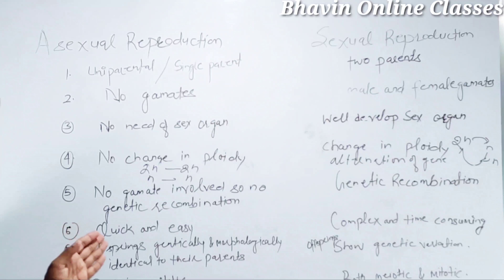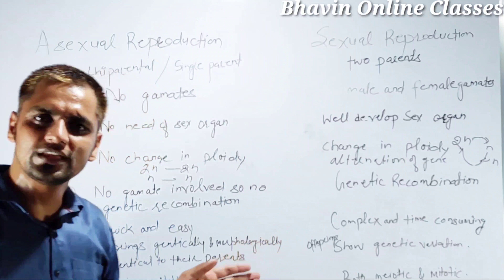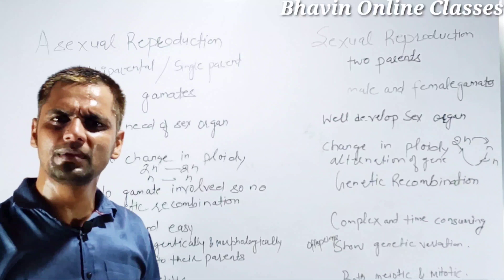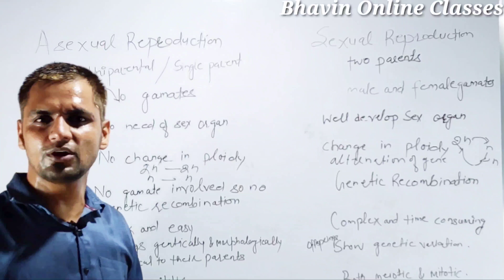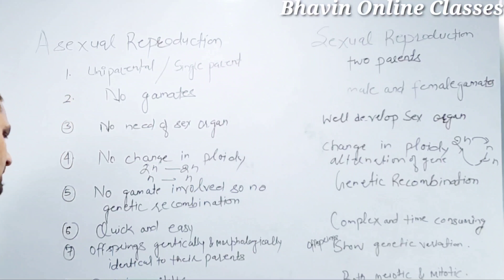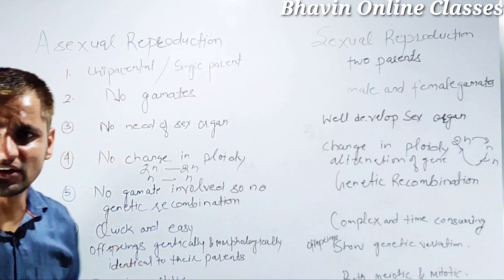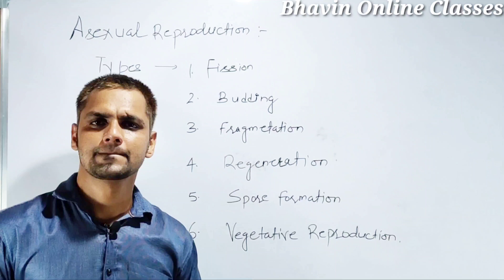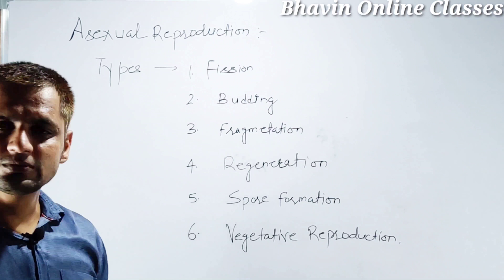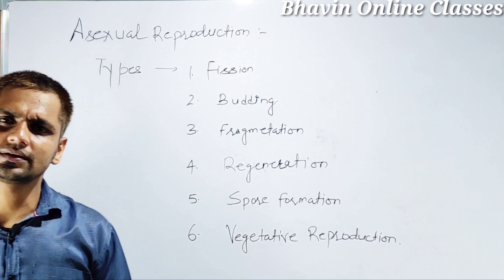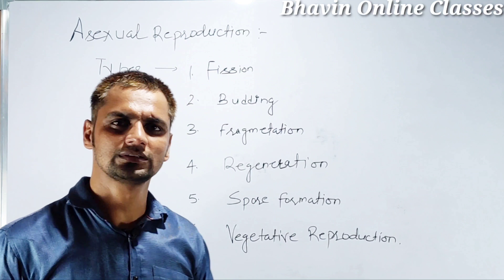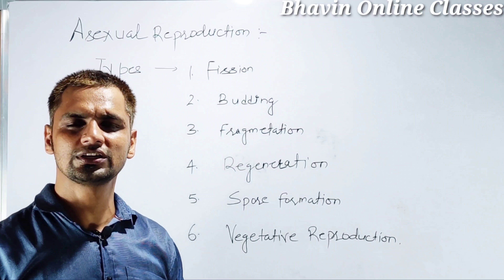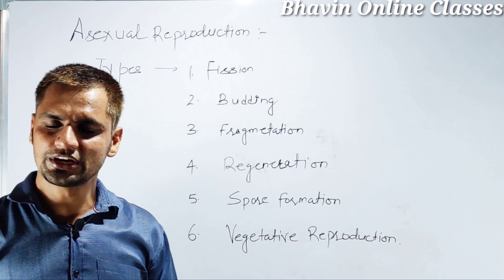Asexual reproduction is quick and easy, while sexual reproduction is complex and tedious. In asexual reproduction, the offspring are exact replicas of their parents, whereas in sexual reproduction offspring show genetic variation. Division in asexual reproduction is mitotic; in sexual reproduction both meiotic and mitotic divisions occur. The six types of asexual reproduction are: fission, budding, fragmentation, regeneration, spore formation, and vegetative reproduction.